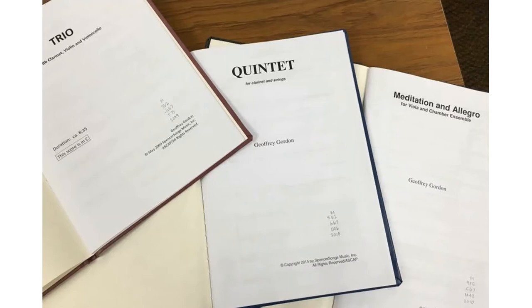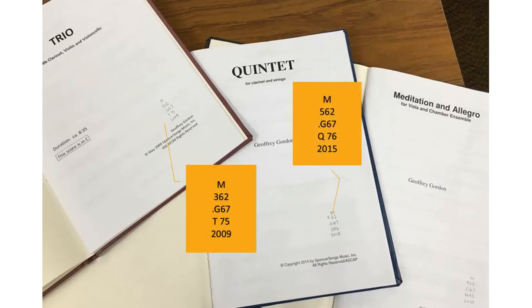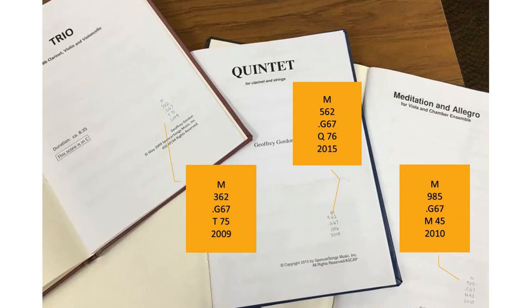In this image, all three scores are by the same composer, but the number and location are based on the size of the ensemble. Trios in the 300s, quintets in the 500s, and chamber ensembles of 9 or more in the 900s. They all have the same letter and number combination after that, which represents the composer.